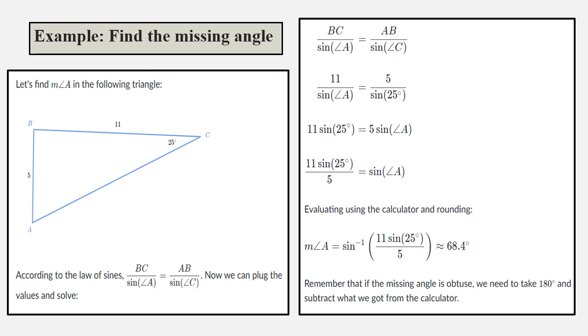Example: Find the missing angle. Let's find the measure of angle A in the following triangle. According to the law of sines, BC/sin A = AB/sin C. Now we can plug the values and solve. We have 11/sin A = 5/sin 25°. So 11 × sin 25° = 5 × sin A. Therefore, sin A = (11 sin 25°)/5.